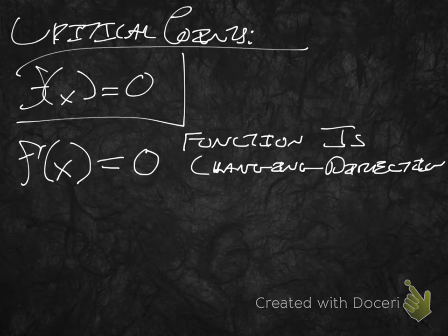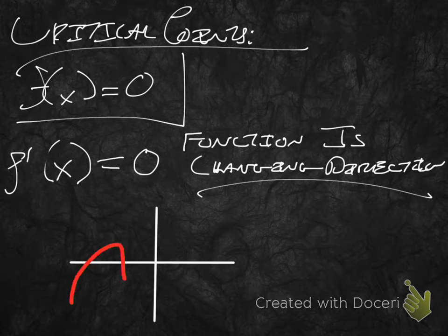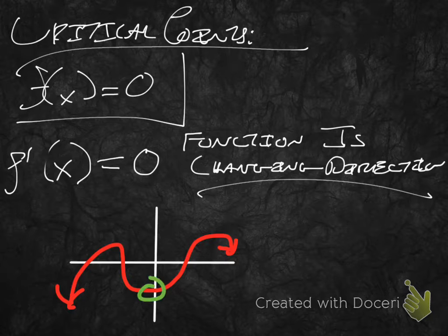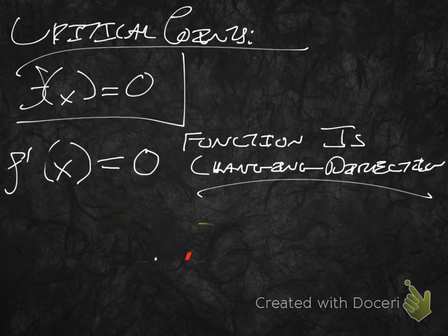If f prime of x equals zero — another way to think of this is the derivative of x equals zero — that means your function is changing direction. Why does f prime of x equal zero mean your function is changing direction? Let's have a pretend function here. Where do you think f prime of x is going to be zero on this function? It's going to be zero at the peaks and troughs, because the derivative of a function is the slope of the tangent line at a certain point.